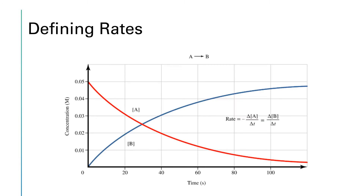When we define the rate of a reaction we want to have a uniform way of expressing what that means, regardless of whether we're monitoring a reactant or a product. In this simple reaction, reactant A turns into product B. We only have to work with A and B, and regardless of whether we're monitoring A or B, we'd like to come up with the exact same number for the rate of the reaction.